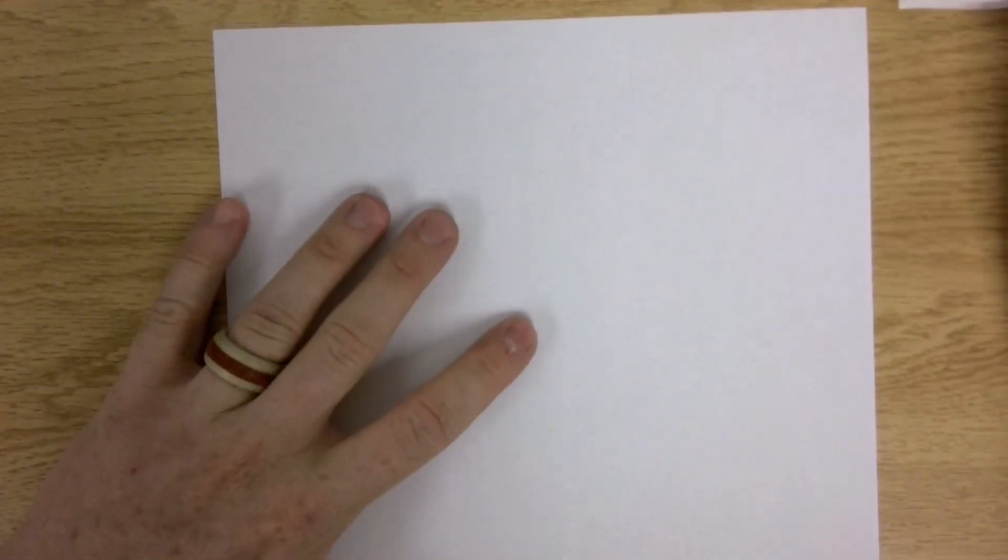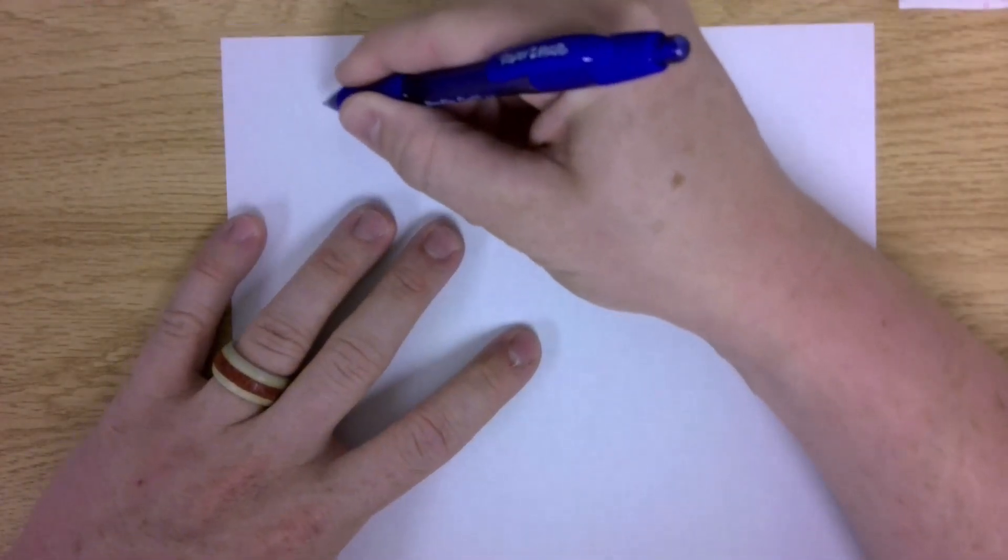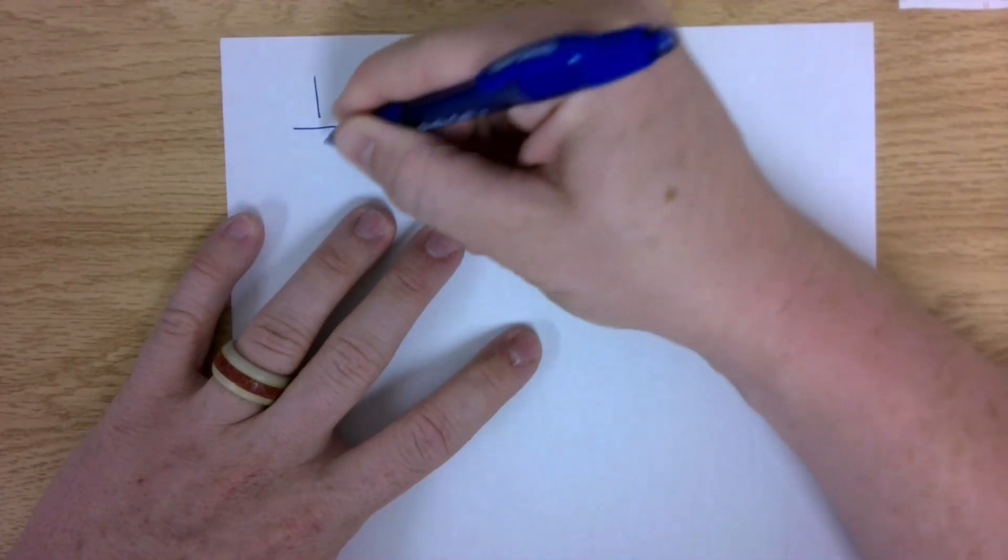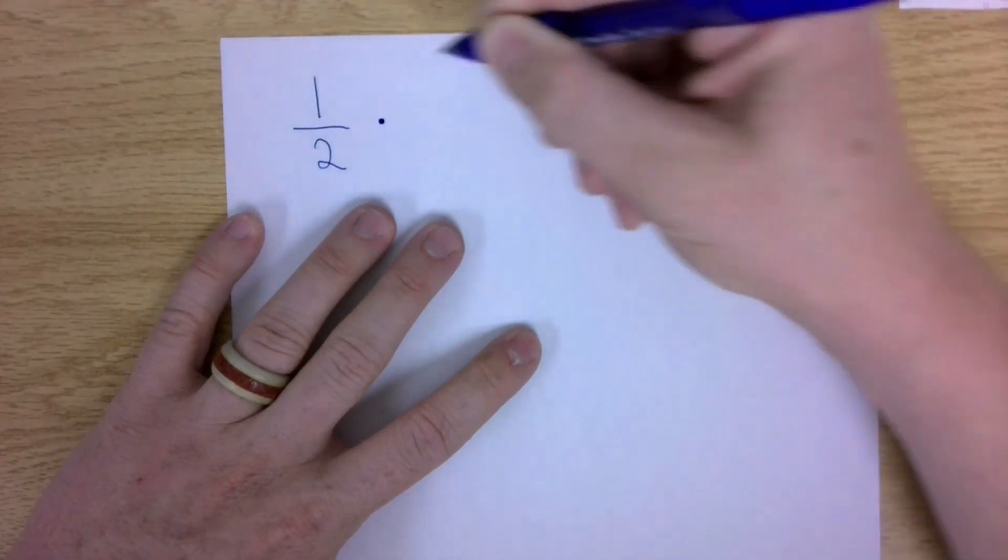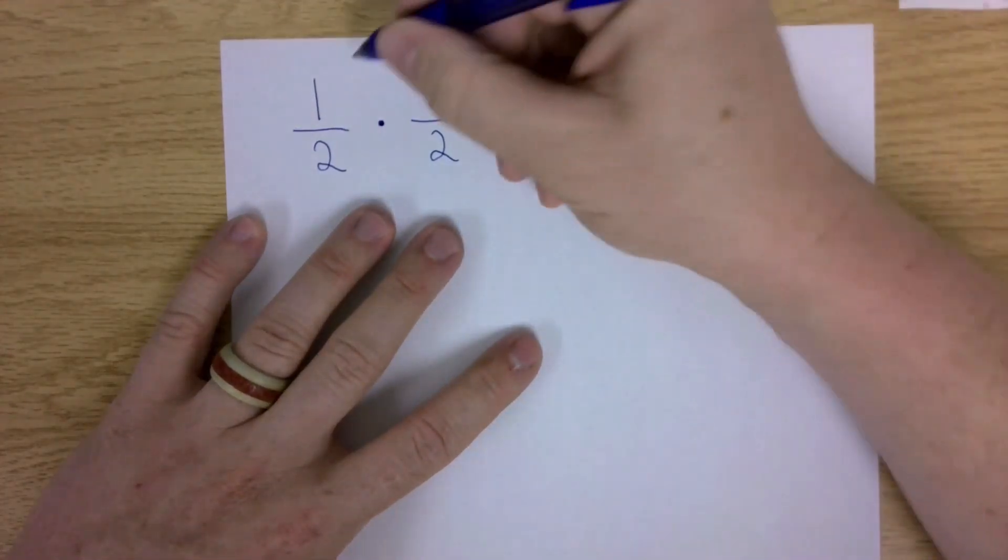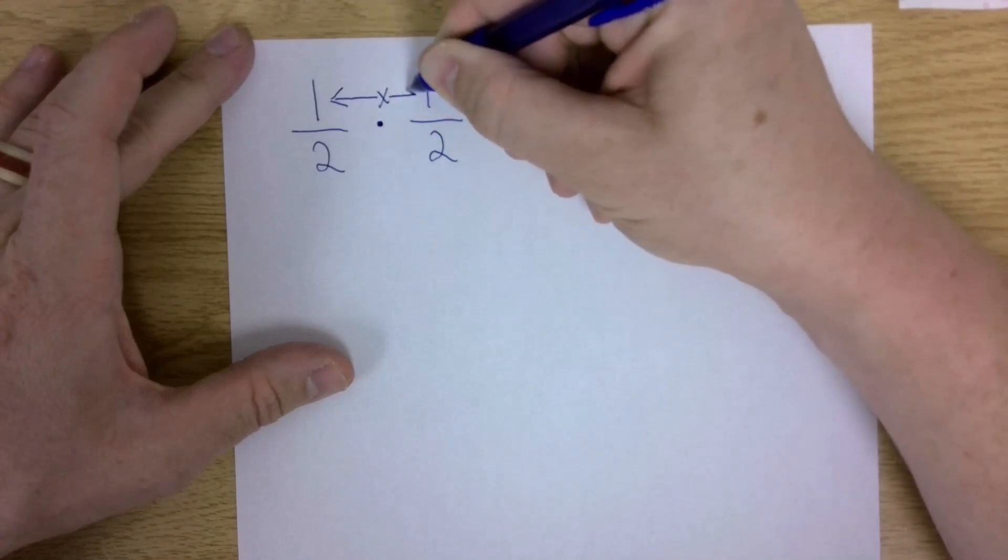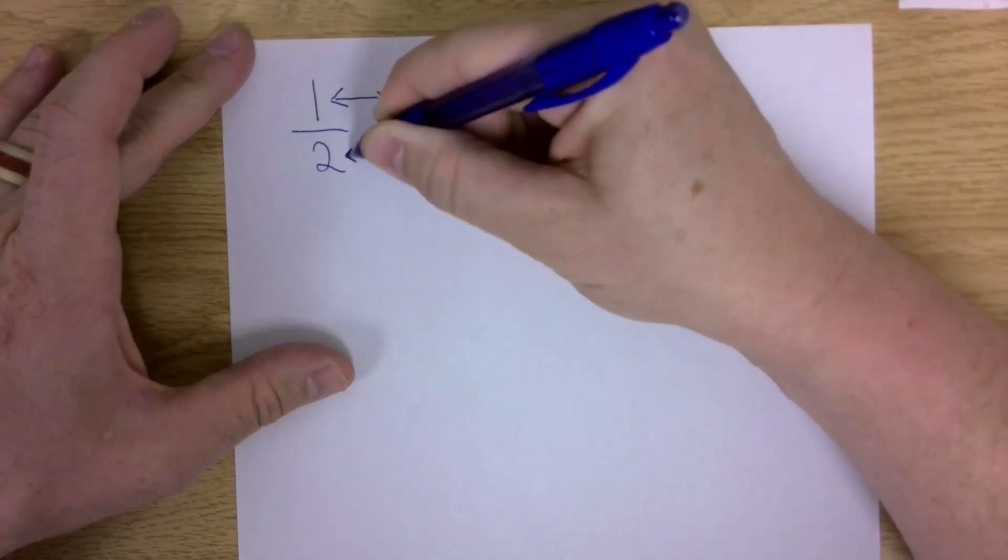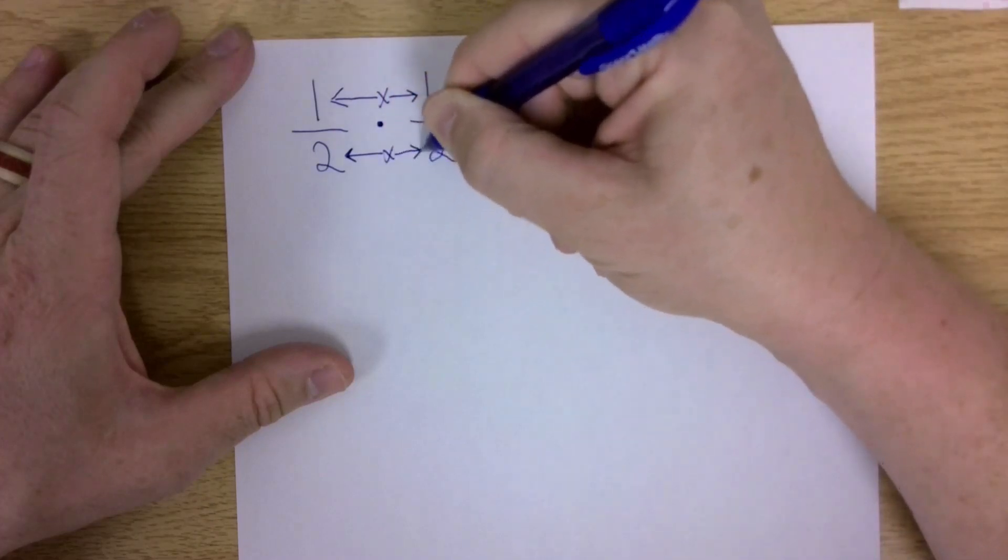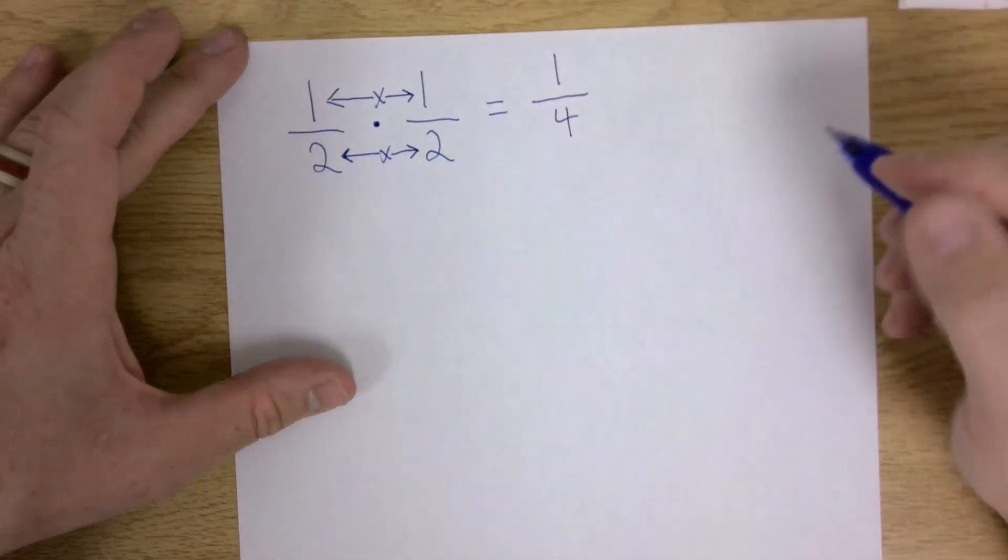Multiplication is going to be a bit simpler. For multiplication of fractions, we just multiply straight across. Let's go back to another simple one. 1 over 2, let me use a different multiplication symbol. That dot just means multiply. 1 over 2 times 1 over 2. All we want to do for multiplying fractions is just straight across. 1 times 1, 2 times 2. 1 times 1 equals 1. 2 times 2 equals 4. That's all you need to do for multiplication.